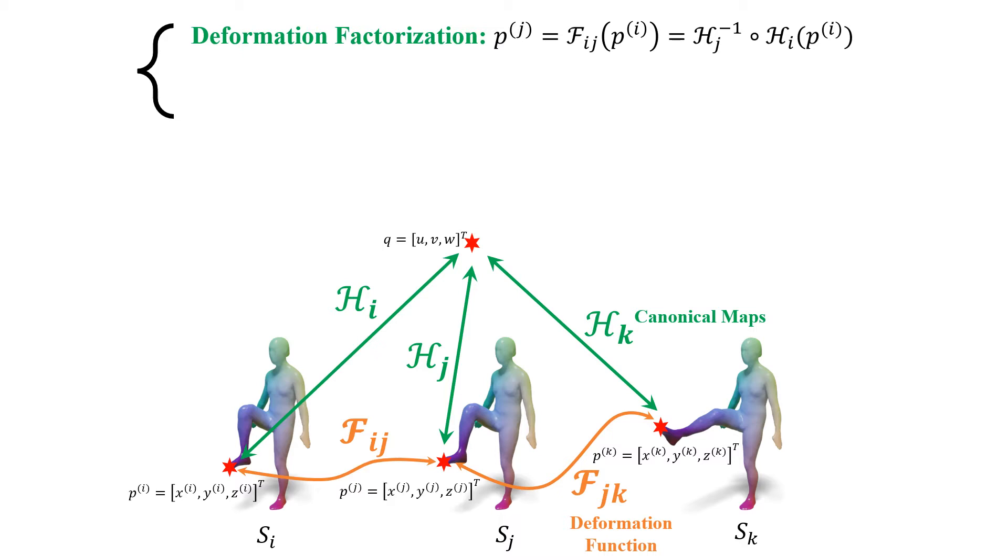The canonical maps are denoted as H shown in the figure with green bidirectional arrows. Note that each canonical map only associates one corresponding deformed surface to the global canonical surface.